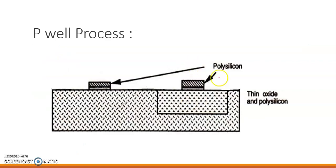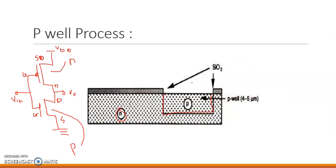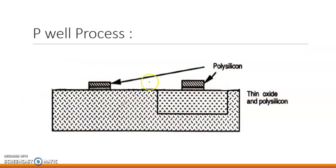In the next step, what we are doing is patterning the polysilicon material, which is nothing but forming the gate. This is the gate of the NMOS and this is the gate of the PMOS. So, simultaneously, with a single mask only, both the polysilicon gates can be formed.